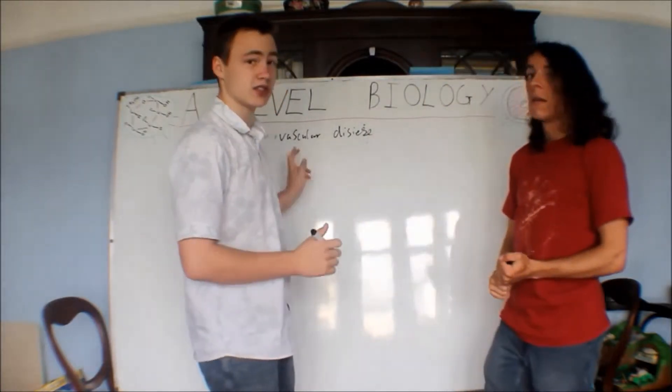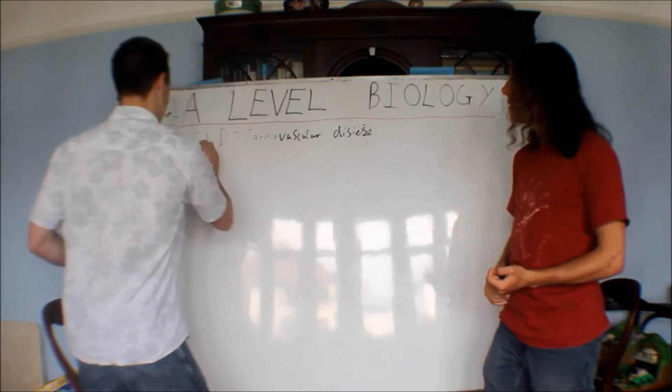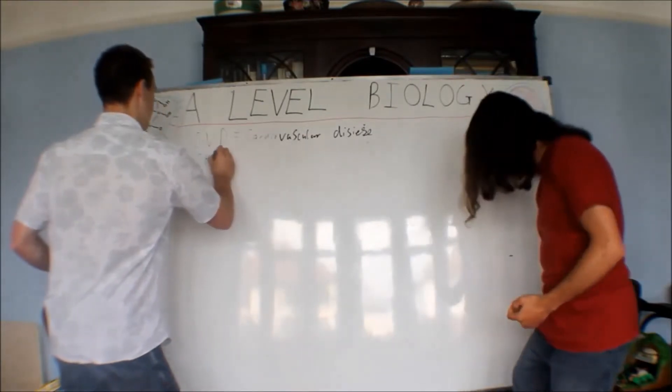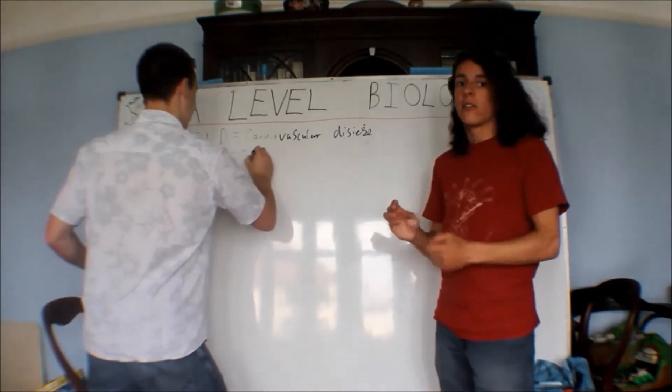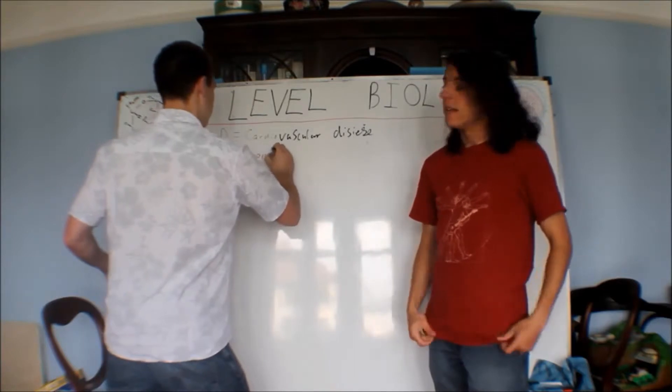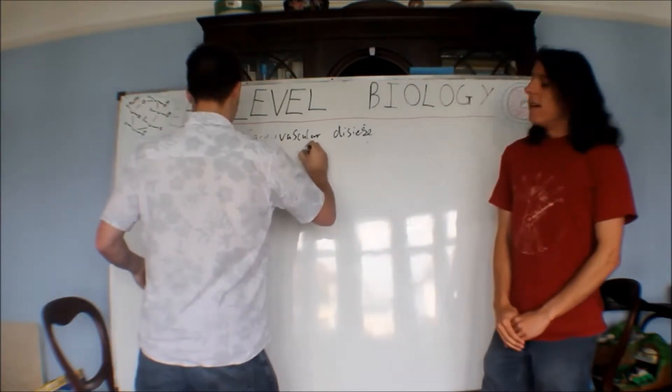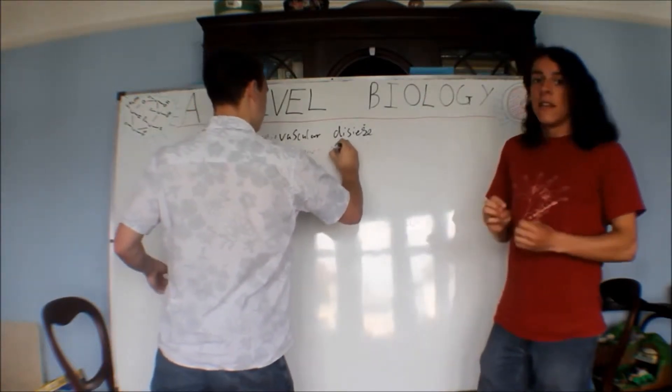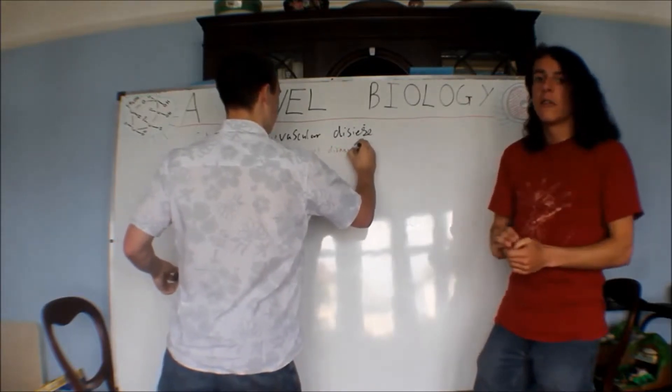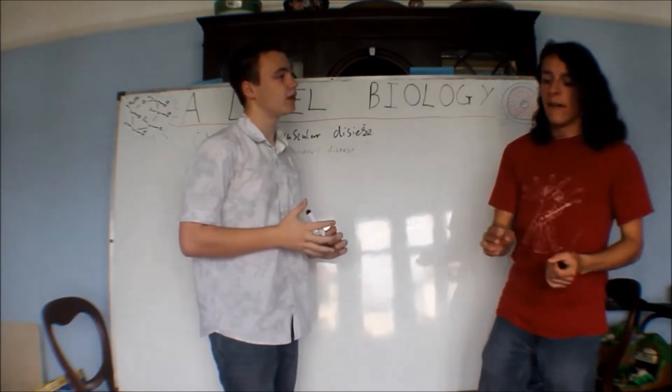There's also CHD, which is a type of CVD. Yeah, that's coronary heart disease, one that affects the coronary arteries in the heart. These are what this unit mostly goes around.